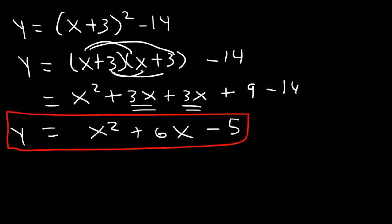So now you know how to convert from standard form to vertex form by completing the square. And you know how to convert from vertex form to standard form by expanding and using the FOIL method.